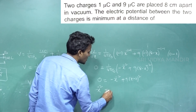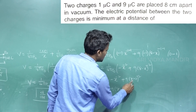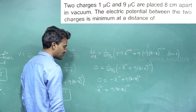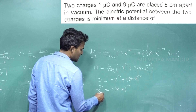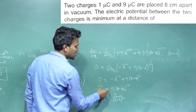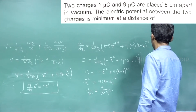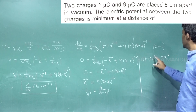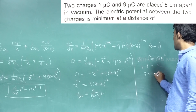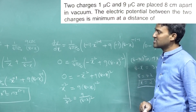This simplifies to 1/X² equals 9/(8 minus X)². Taking the cross product: (8 minus X)² equals 9X². Taking the square root: (8 minus X) equals 3X. Therefore 8 equals 4X, giving X equals 2 centimetres. The electric potential is minimum at a distance of 2 centimetres from the 1 micro coulomb charge.